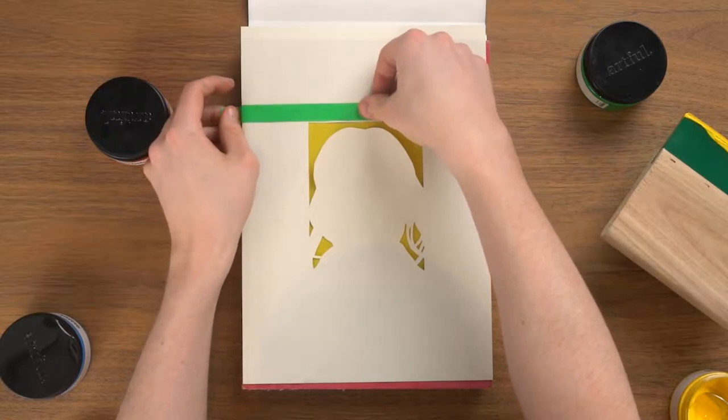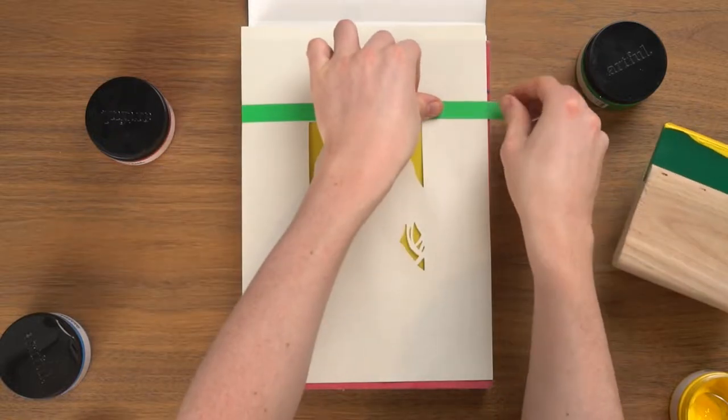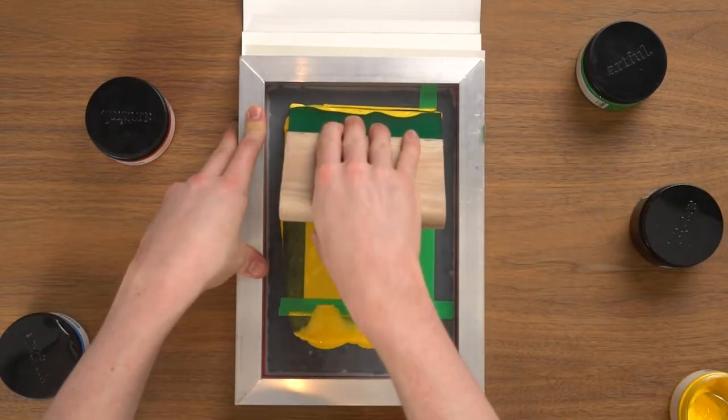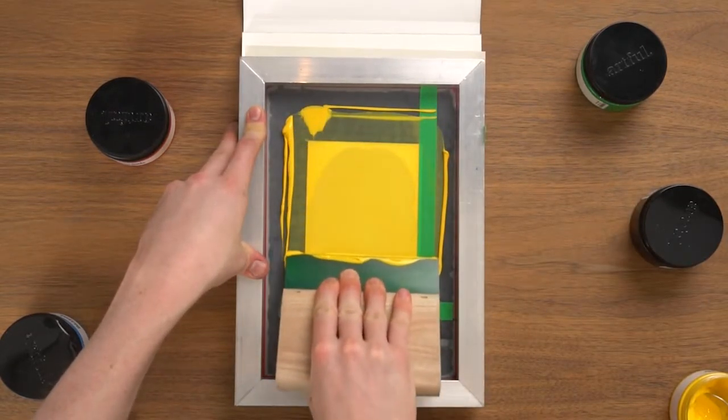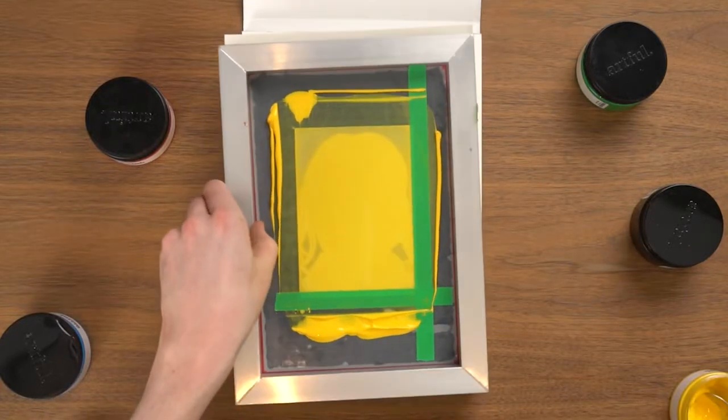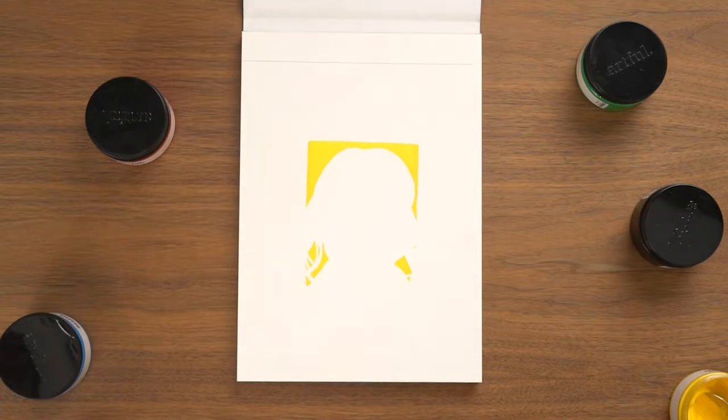I can stick down the stencil with an extra bit of tape if needs be. Then flipping the screen again, I can pull the paint towards myself in one smooth motion to make the print. Make sure you're holding your squeegee blade at a 45 degree angle so the rubber of the blade flexes. And there's a nice clean background layer.